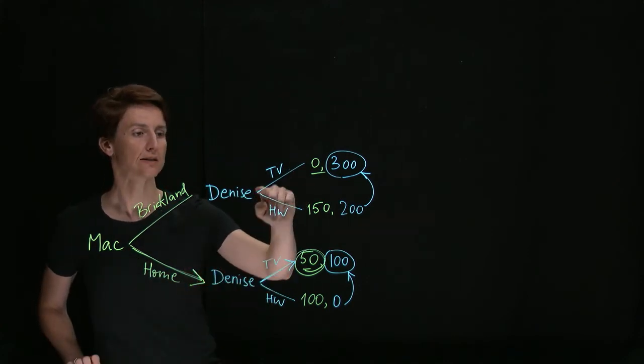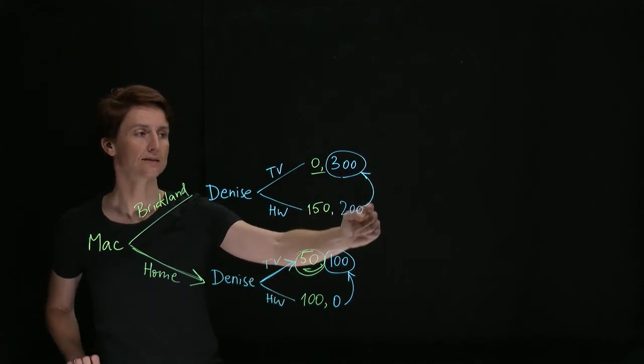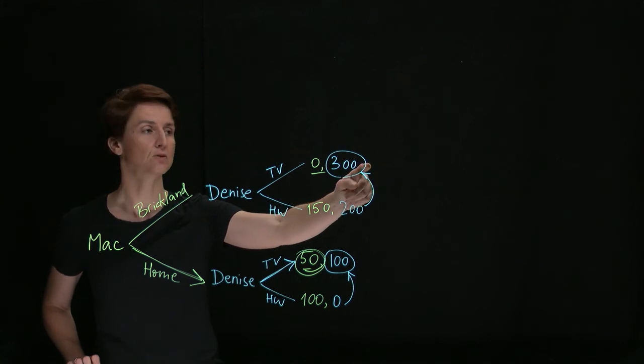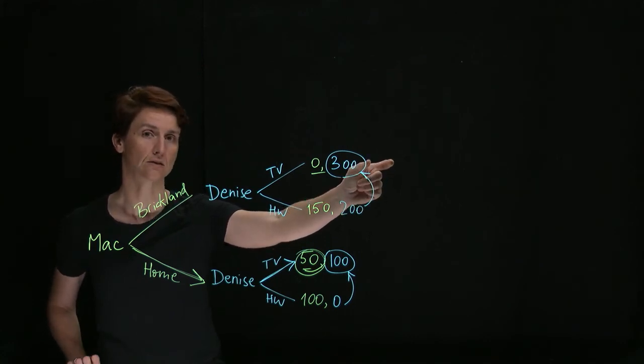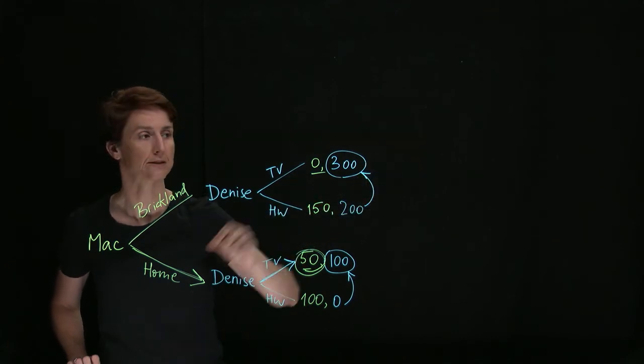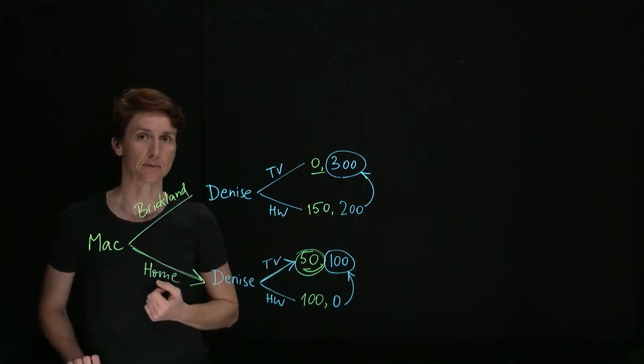Then when she's deciding whether or not to do her homework, what's in the balance isn't just this immediate surplus from watching TV, but also the potential loss of the trust. So this would now be minus the broken promise, right? That could then potentially solve this dilemma.